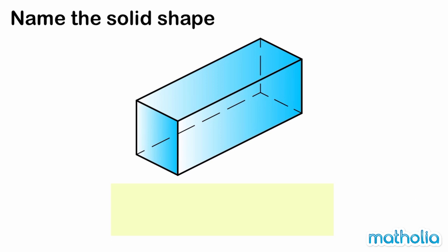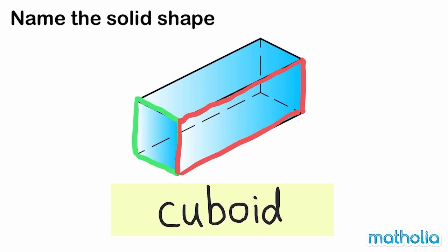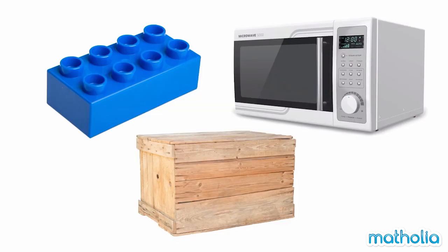This shape has square faces and rectangle faces. We call this solid shape a cuboid. These objects have shapes similar to a cuboid.